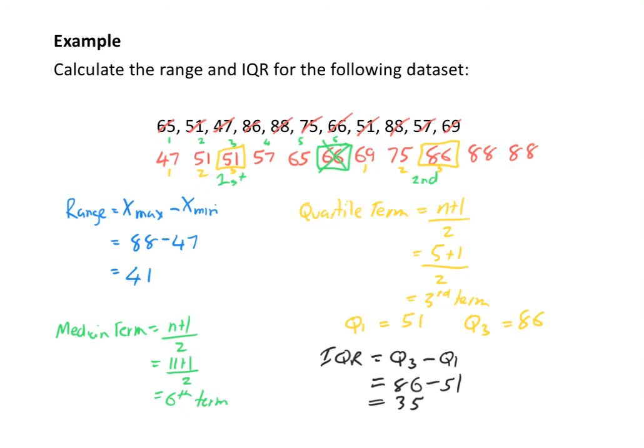So I know that 50% of my data in the original data set is between 51 and 86.